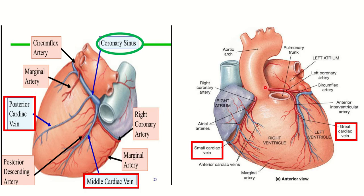Here we can see the anterior view and the posterior view of the heart. In the posterior part there is the coronary sinus, and the coronary sinus drains into the right atrium. It lies in the posterior atrioventricular groove and receives its tributaries from different locations. It courses along the left atrium and finally receives tributaries in the anterior part.